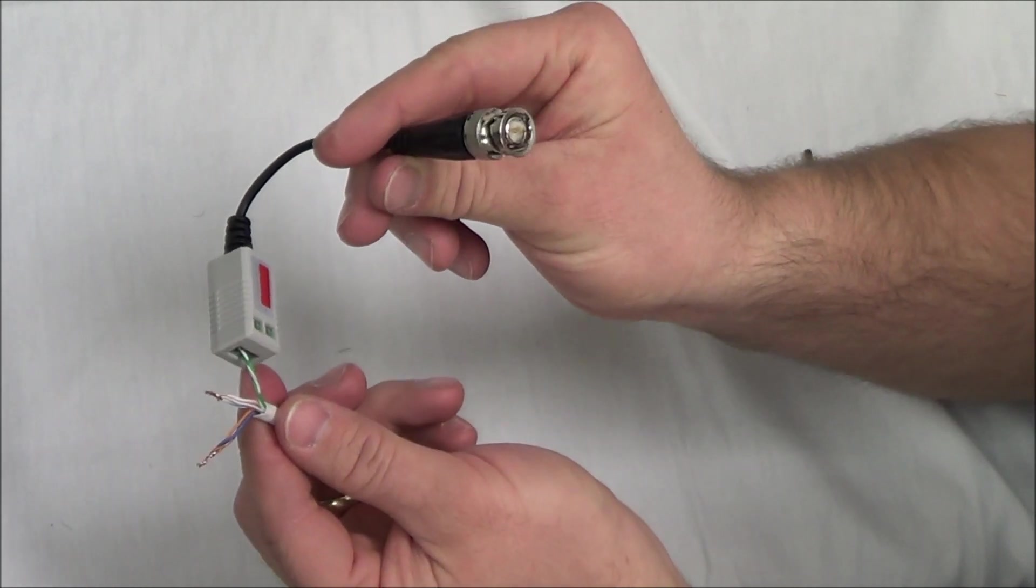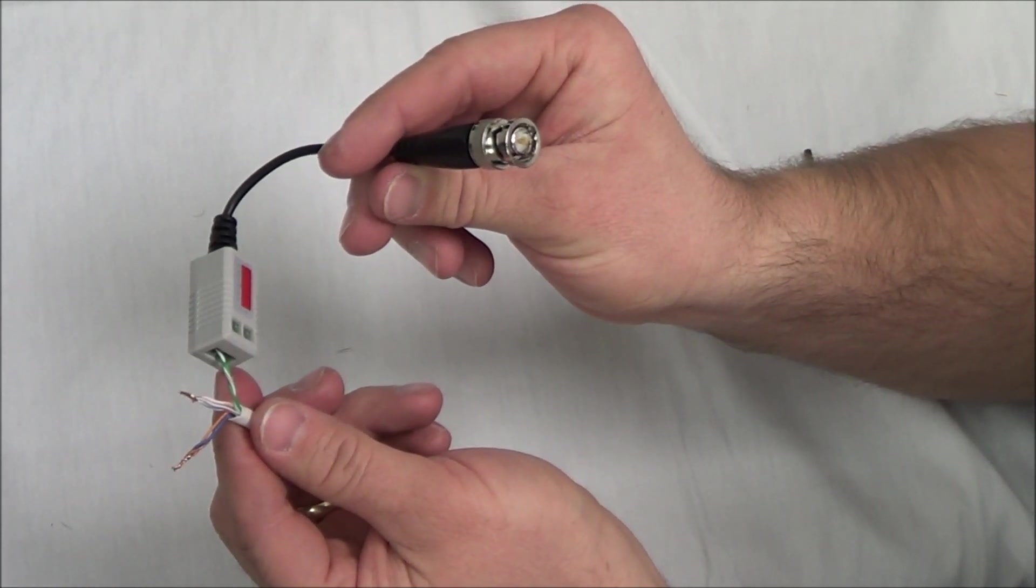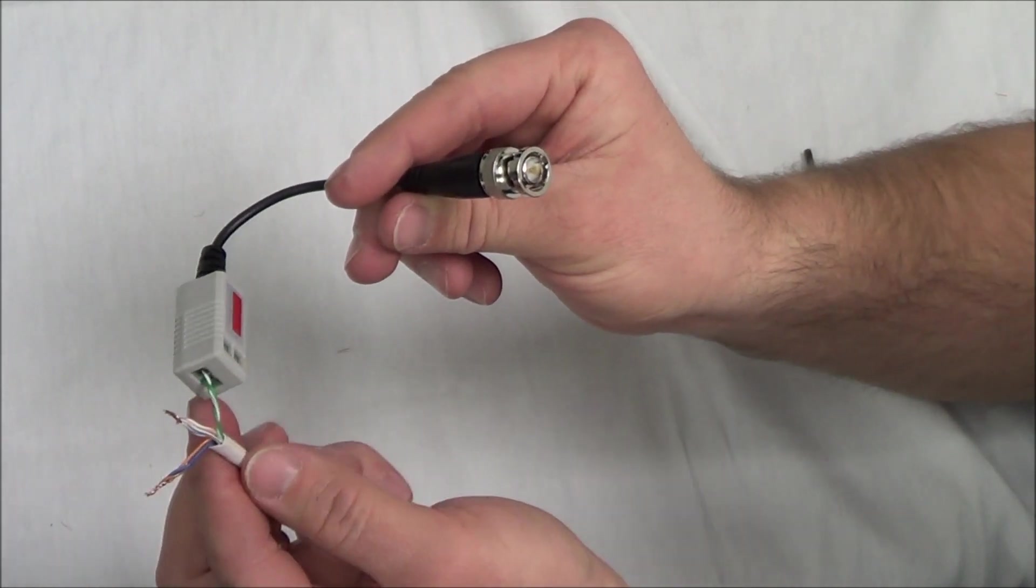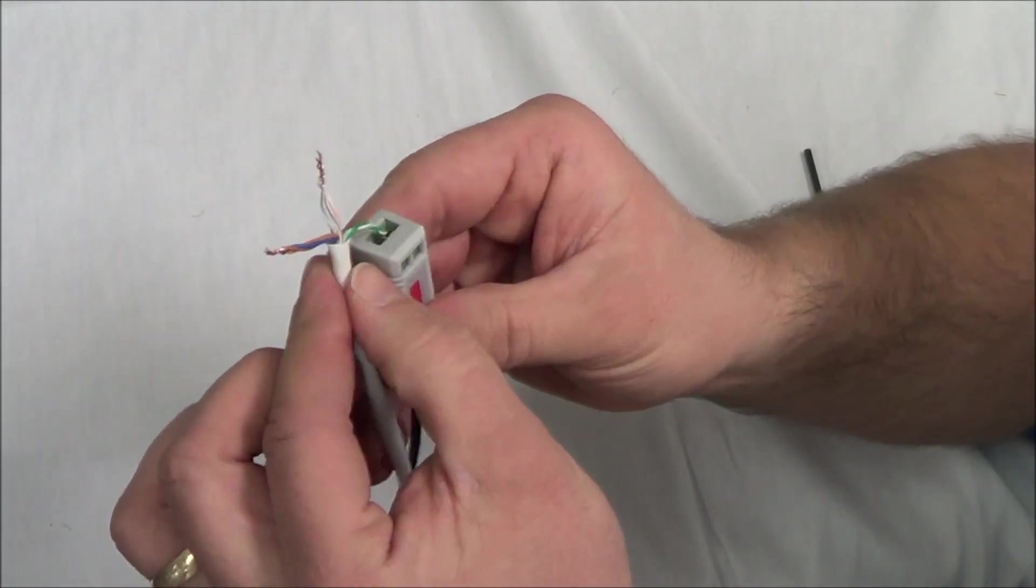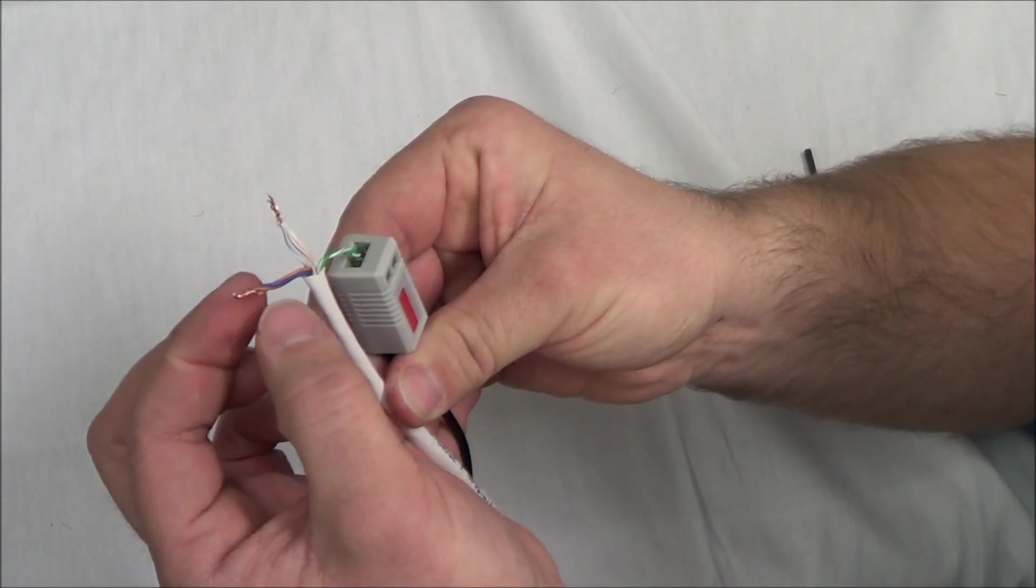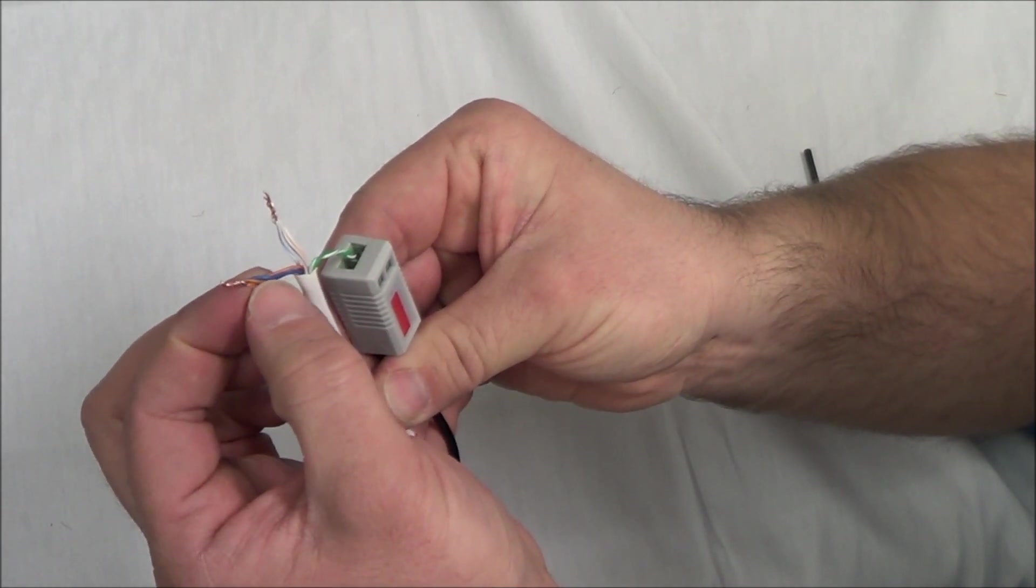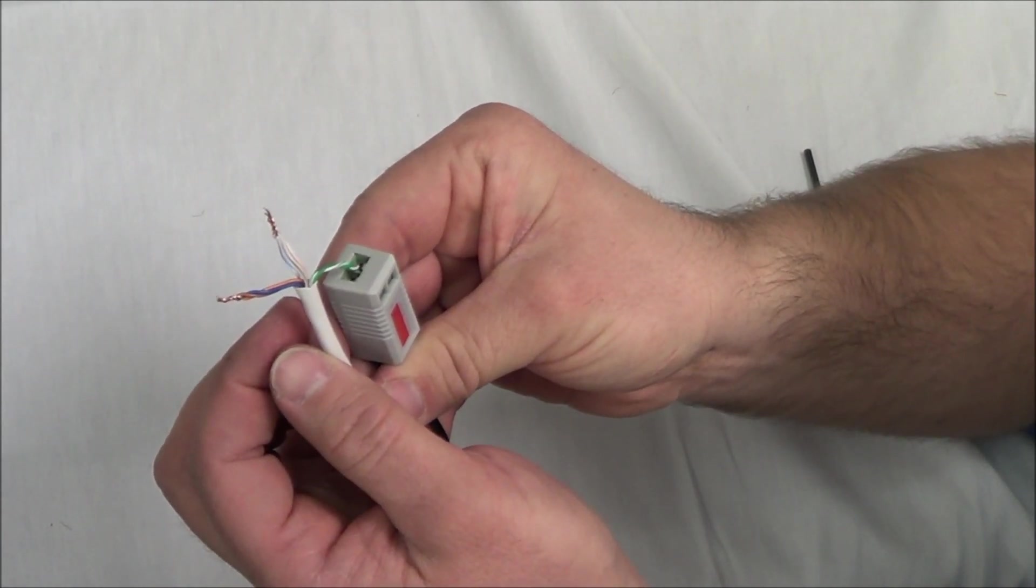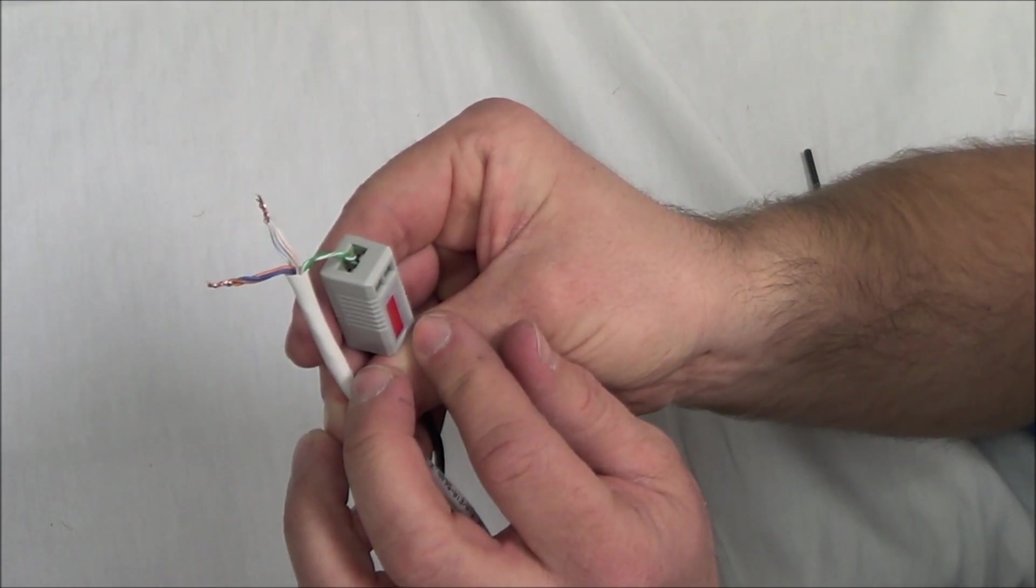As you can see, we're done. We've attached our BNC connector to our Cat5 cable using our video balun. Now, remember, the other two wires that are left over, they're going to be for your power supply. And make sure you use your solid for your positive and your stripe for your negative.